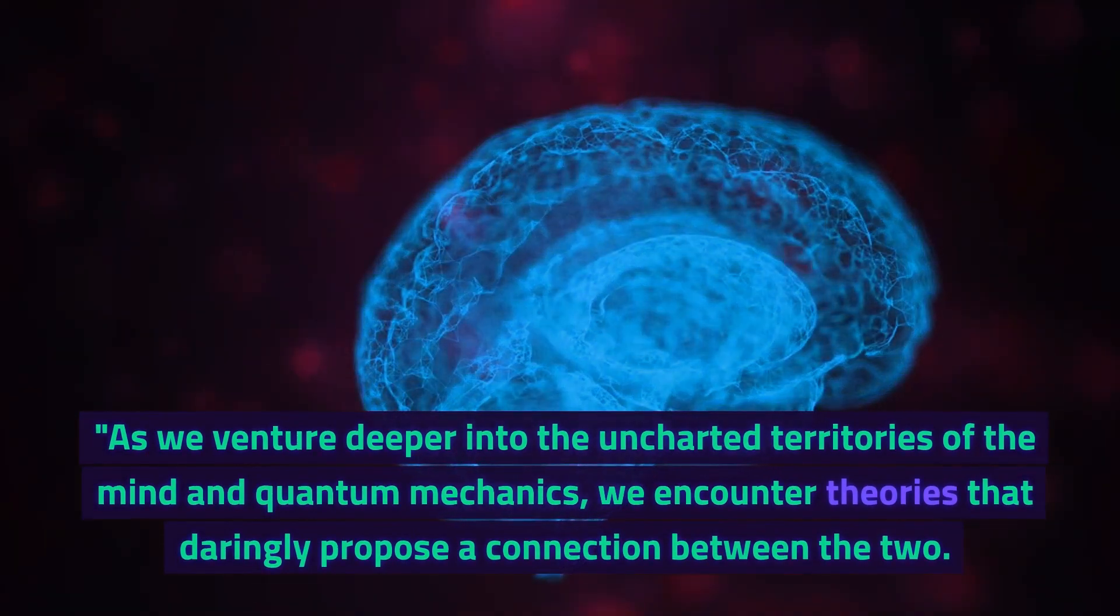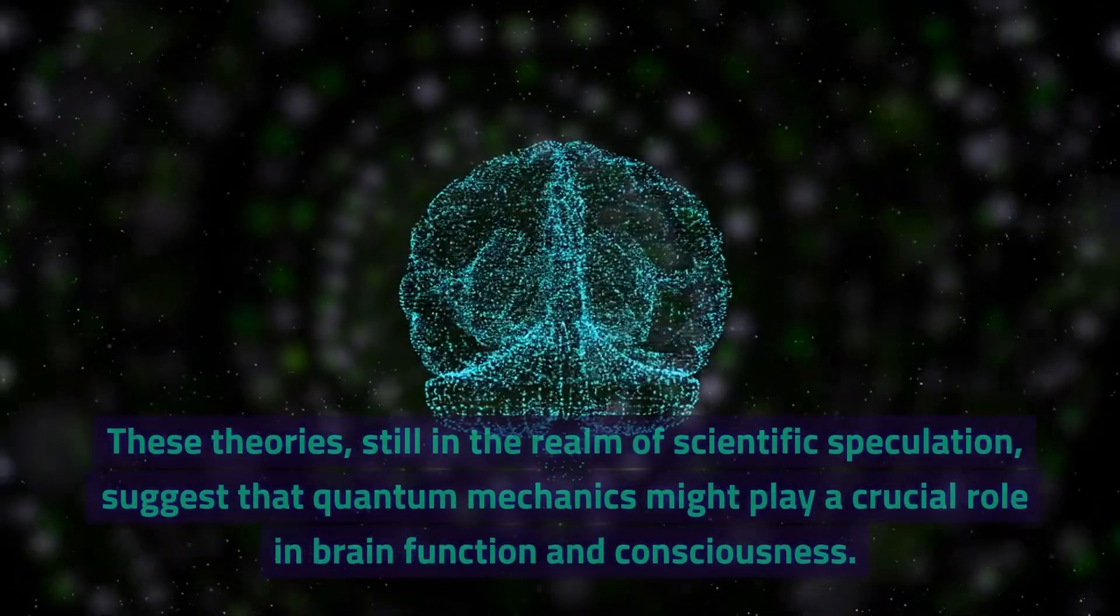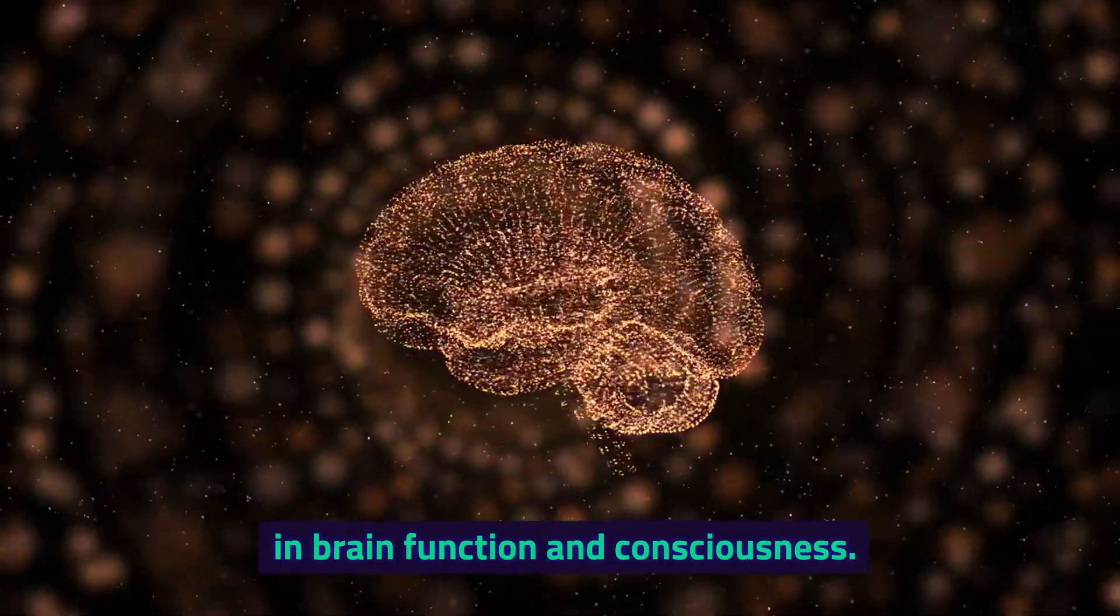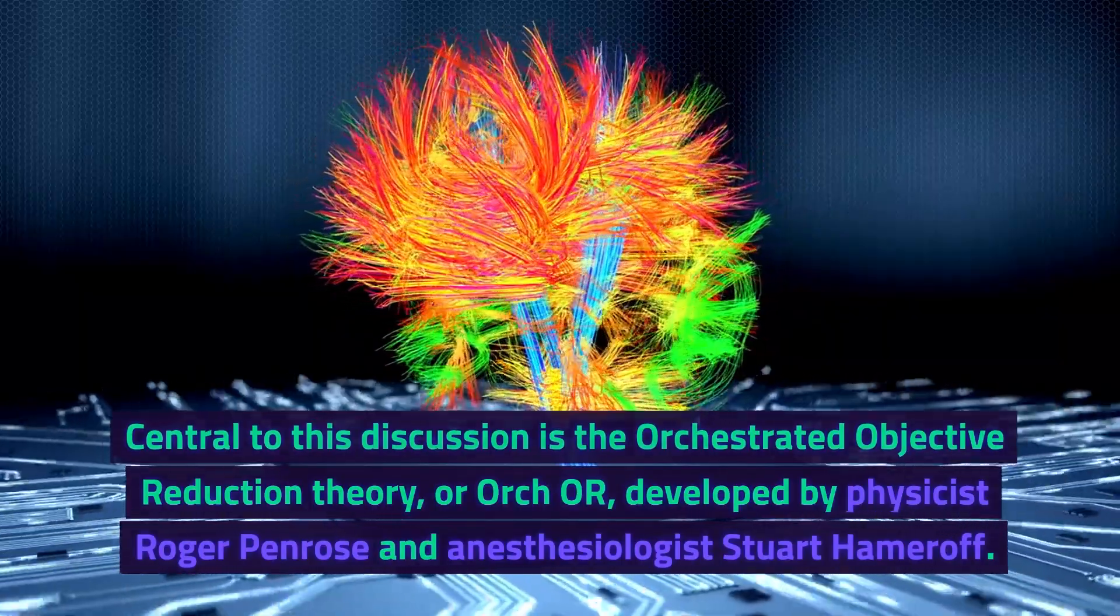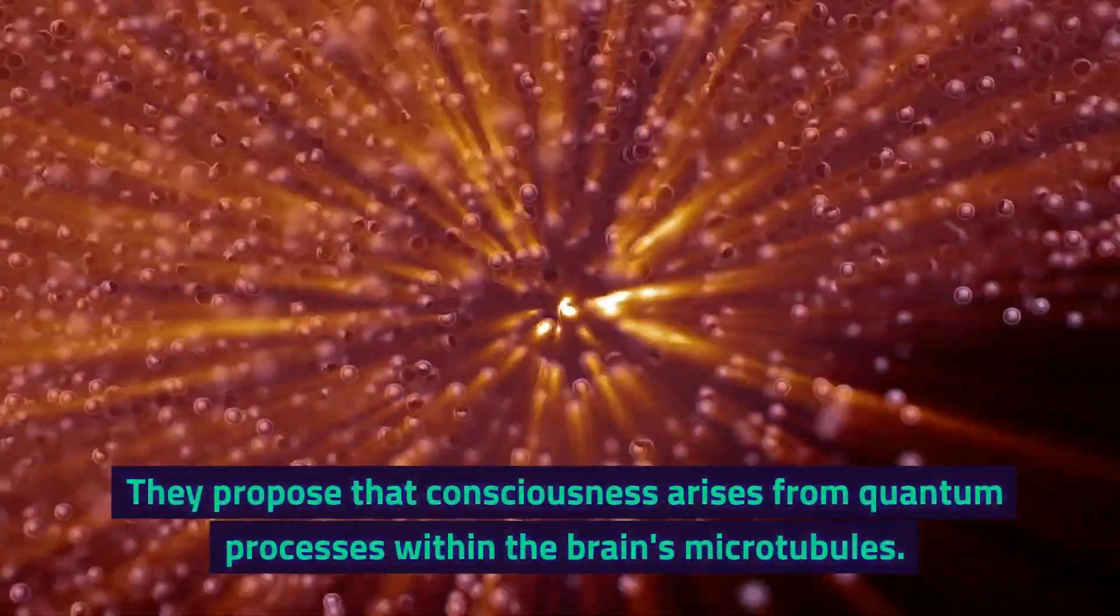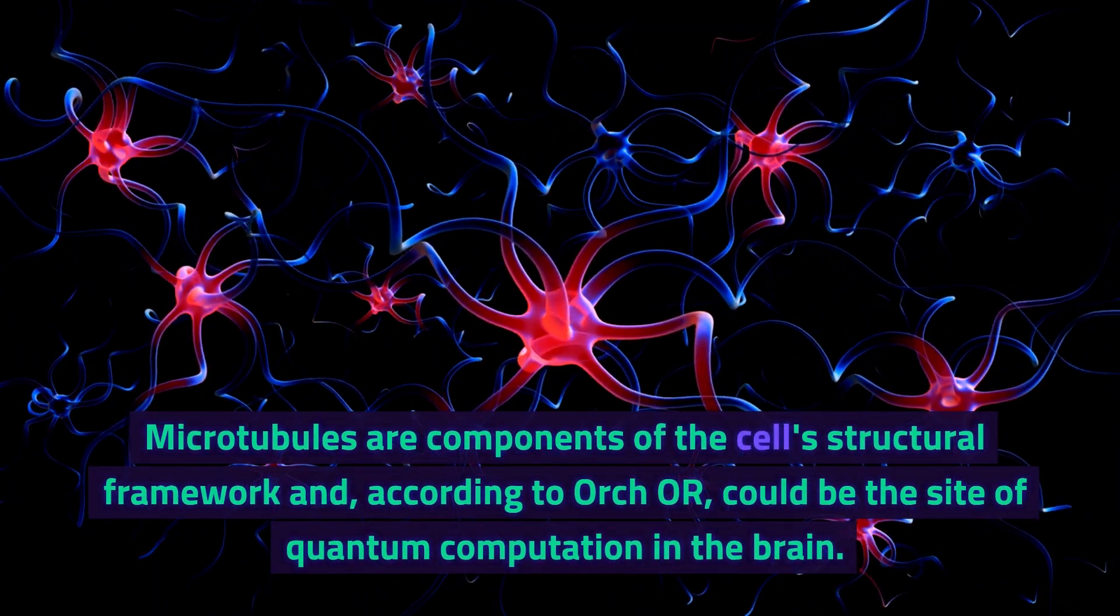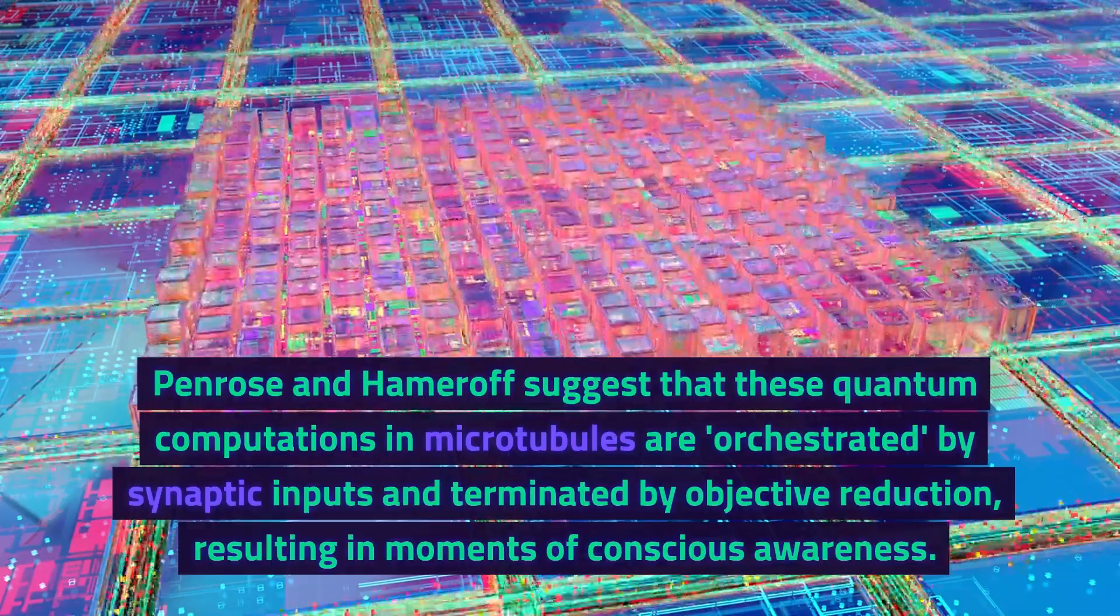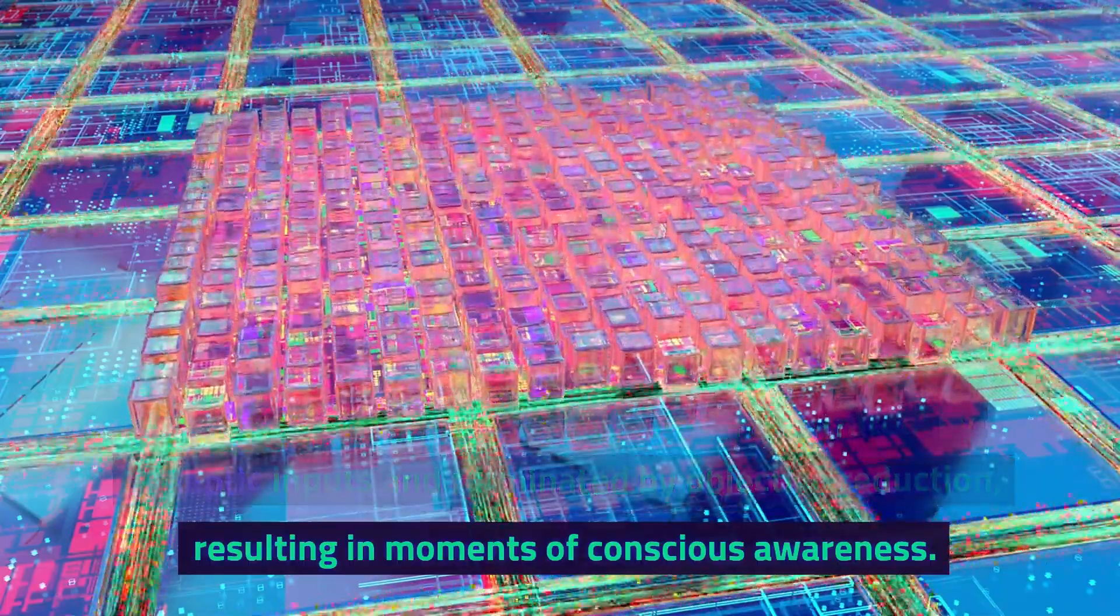As we venture deeper into the uncharted territories of the mind and quantum mechanics, we encounter theories that daringly propose a connection between the two. These theories, still in the realm of scientific speculation, suggest that quantum mechanics might play a crucial role in brain function and consciousness. Central to this discussion is the orchestrated objective reduction theory, or ORCH-OR, developed by physicist Roger Penrose and anesthesiologist Stuart Hameroff. They propose that consciousness arises from quantum processes within the brain's microtubules. Microtubules are components of the cell's structural framework and, according to ORCH-OR, could be the site of quantum computation in the brain. Penrose and Hameroff suggest that these quantum computations in microtubules are orchestrated by synaptic inputs and terminated by objective reduction, resulting in moments of conscious awareness.